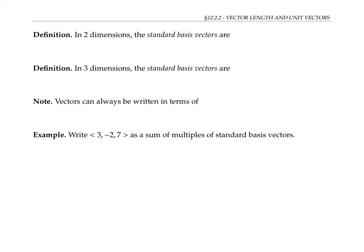There's a particular collection of unit vectors that's very handy to work with, and these are the standard basis vectors. In two dimensions, the standard basis vectors are the vector (1, 0), called i, and the vector (0, 1), called j. If we draw these two vectors on the coordinate plane with their initial points at the origin, vector i goes in the direction of the x-axis and vector j goes in the direction of the y-axis. In three dimensions, the standard basis vectors are denoted i, j, and k, with components (1, 0, 0) for i, (0, 1, 0) for j, and (0, 0, 1) for k.